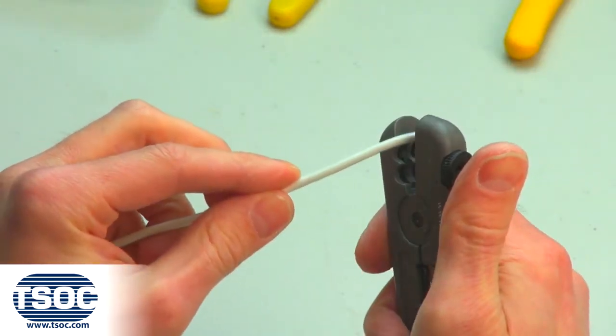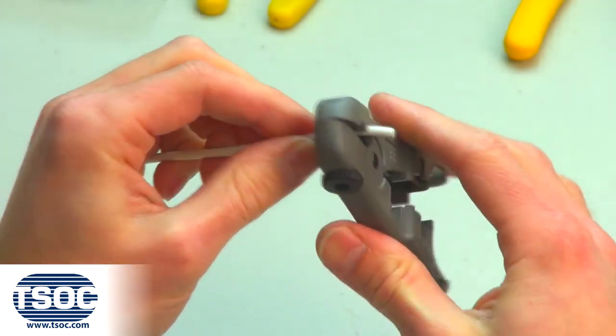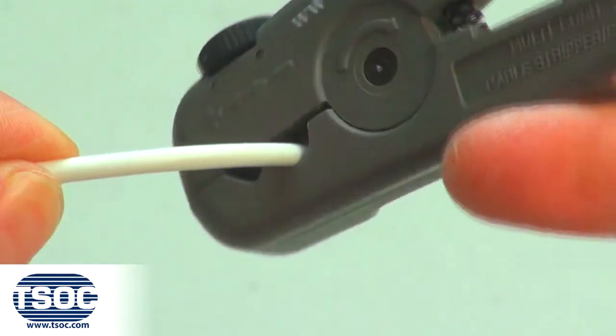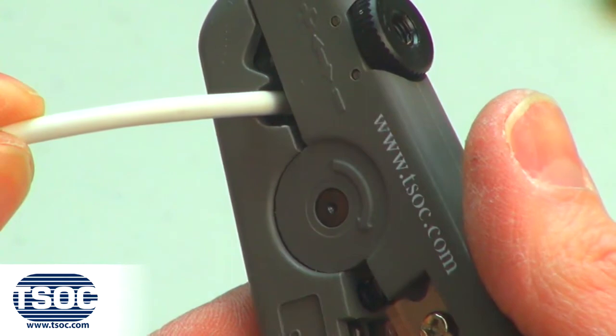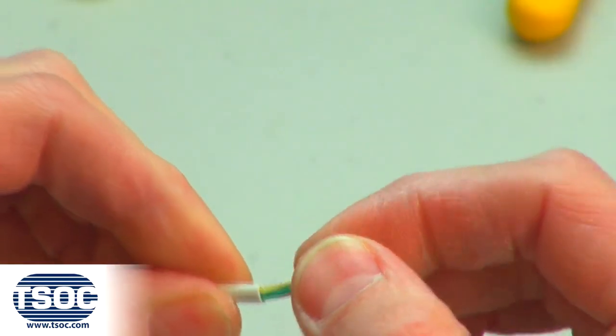Step one: cut the specified length of two pair Cat 3 UTP solid cable and insert into the cable prep tool. Rotate in one direction one to two turns to score the cable jacket.